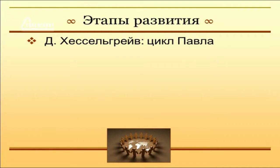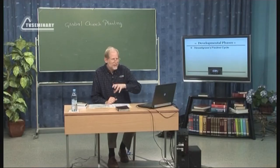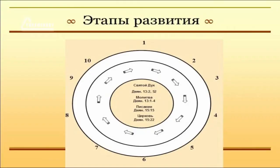Рассматривать все это можно по-разному. В своей книге по основанию церквей в межкультурном контексте Дэвид Хэссельгрейв предлагает так называемый «Цикл Павла», разработанный на основе стратегии основания церквей апостолом Павлом. Этот Павлов метод Хэссельгрейв представляет нам в виде циклической модели. Обратите внимание на рисунок из книги Хэссельгрейва: ядро модели составляет Святой Дух, направляющий миссионера в его служение.